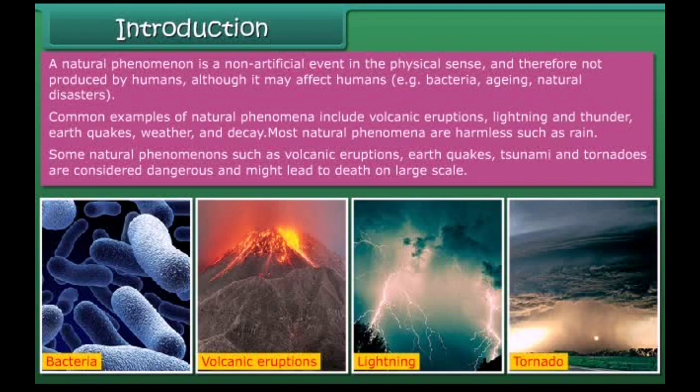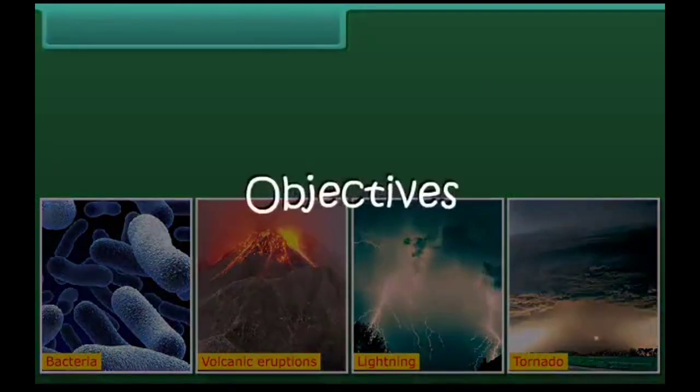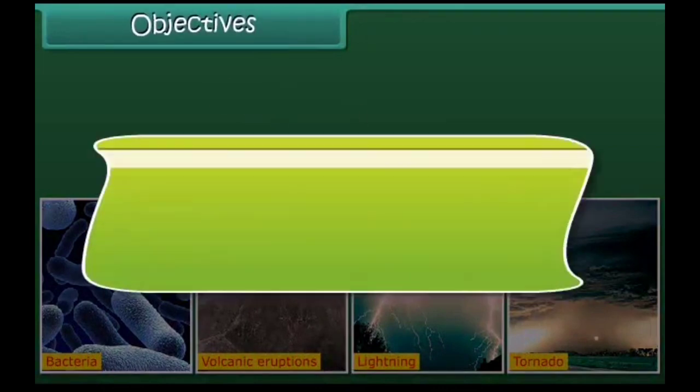Some natural phenomena such as volcanic eruptions, earthquakes, tsunami, and tornadoes are considered dangerous and might lead to death on a large scale.